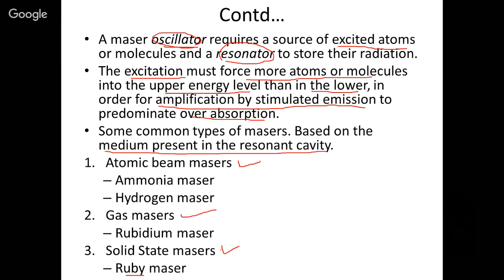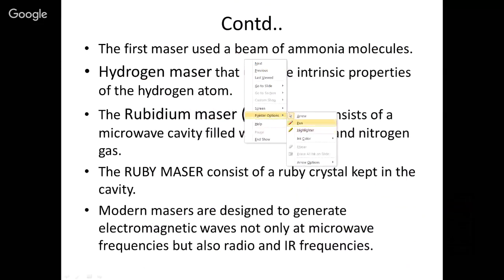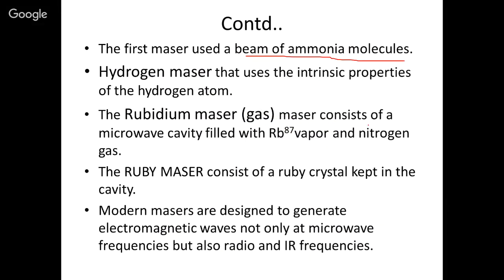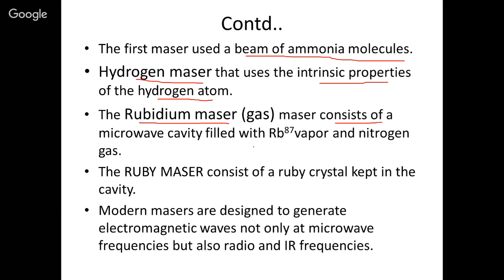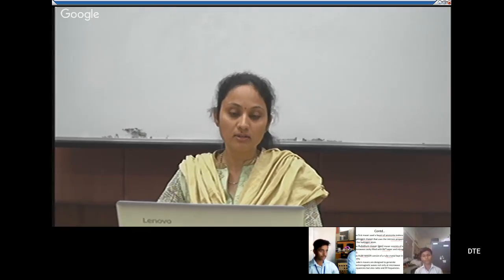These are some of the types of MASERs. The first MASER developed used a beam of ammonia molecules — belonging to the atomic beam category. The second was the hydrogen MASER, which uses intrinsic properties of hydrogen atoms for excitation and stimulated emission. The third was the gas MASER — the rubidium MASER — which consists of a microwave cavity filled with rubidium vapor and nitrogen gas to produce stimulated emission of radiation. The ruby MASER consists of a ruby crystal kept in a resonating cavity.